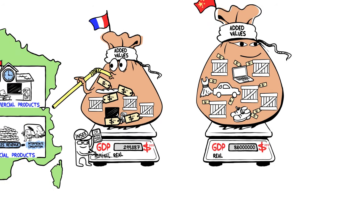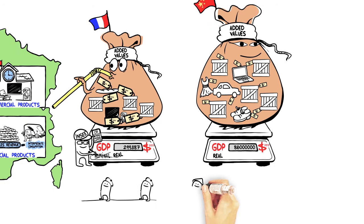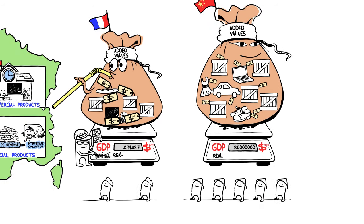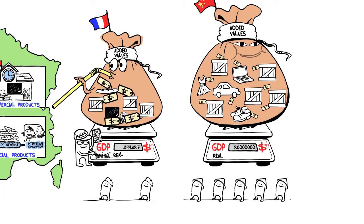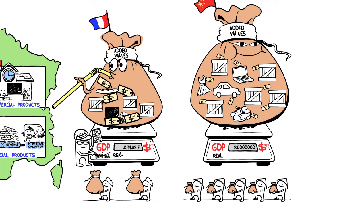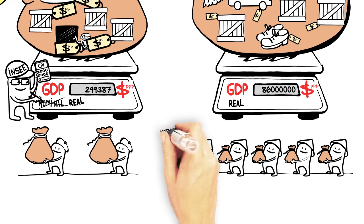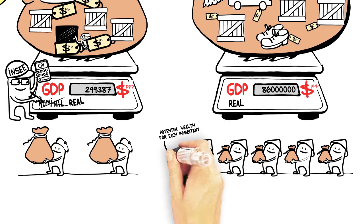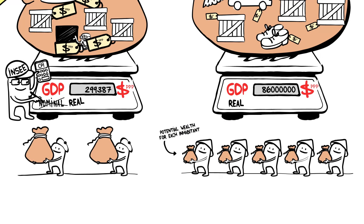We also need to take into account the number of inhabitants per country. The more inhabitants there are, the more significant overall production may be. Each country's GDP is therefore divided by its number of inhabitants, so we find out the potential wealth for each inhabitant.